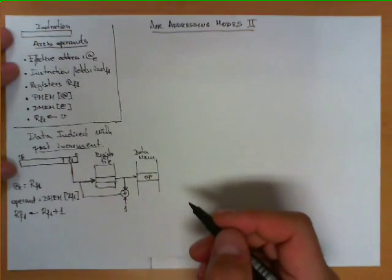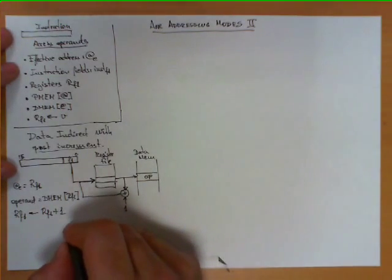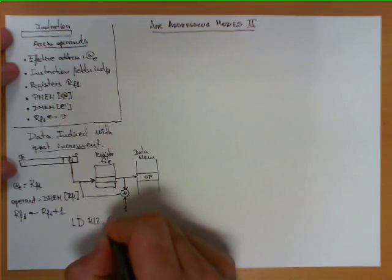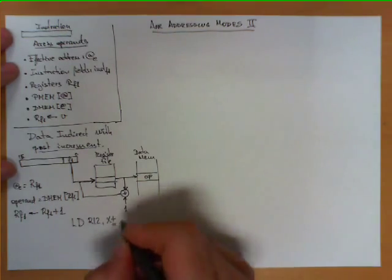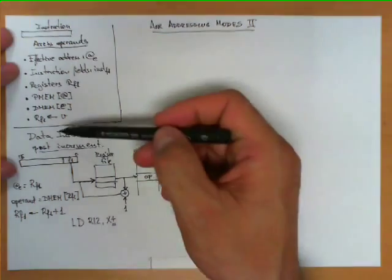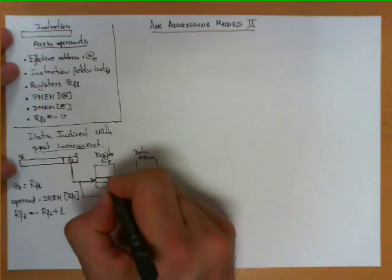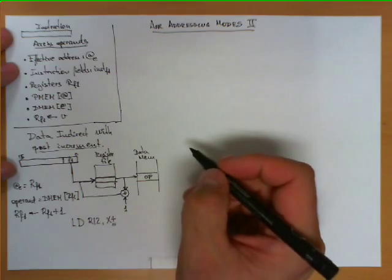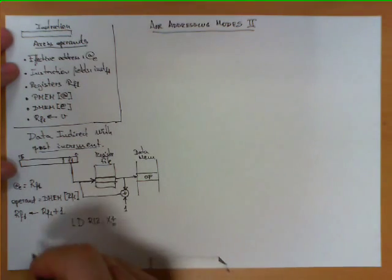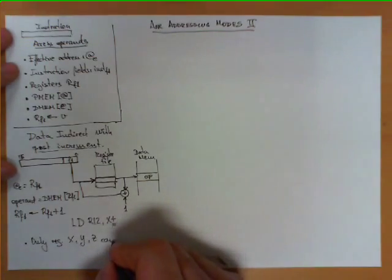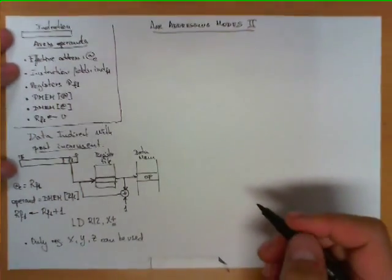An example of the syntax used in an assembly program would be the instruction LD R12, X+. The plus sign here denotes that this instruction uses Data Indirect With Post Increment. Note that because the register contains an address, it must be 16 bits. Therefore, only registers X, Y, and Z can be used with this addressing mode.